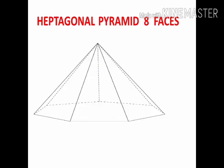Hopefully you may understand the shortcut. Heptagonal pyramid. Heptagon means seven sides. And on each side, one triangle is fixed. So seven sides, eight faces.